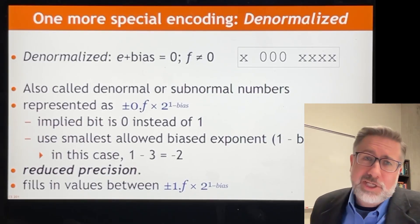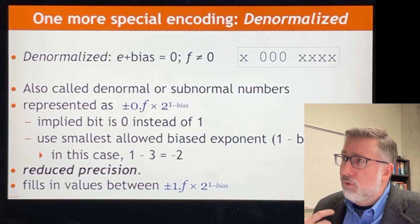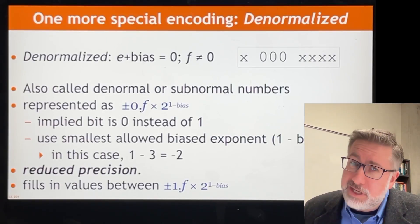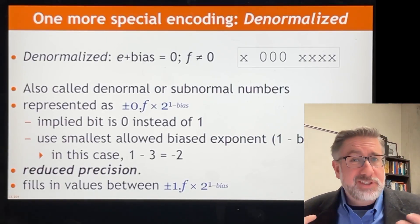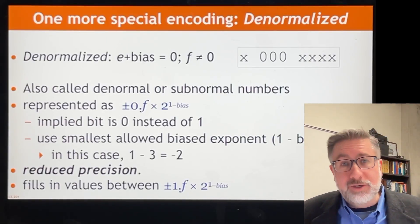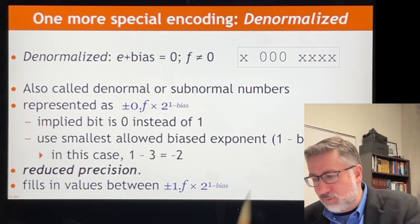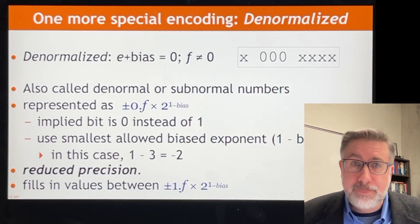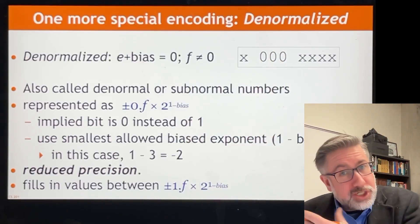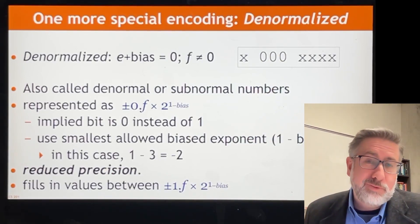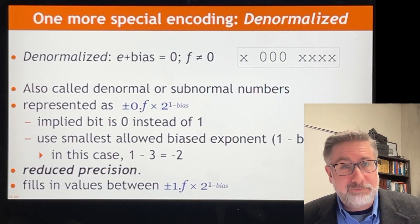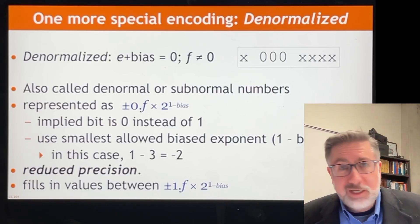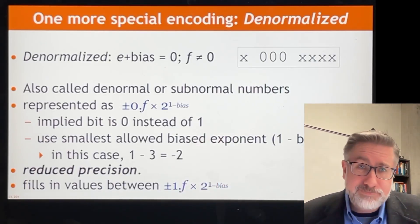Now a reasonable question to ask is what should the exponent of these denormal numbers be? This is a point of some contention. One argument says the exponent is clearly encoded as zero, zero, zero. Our traditional way of telling us what that value is is to subtract the bias. Our bias in this toy problem is three, so this should be negative three.